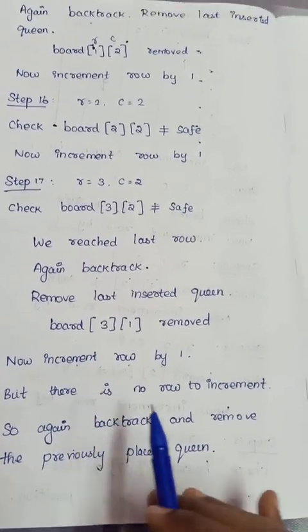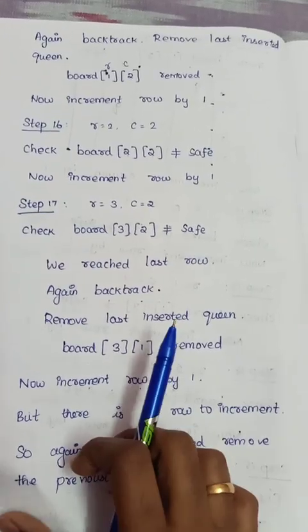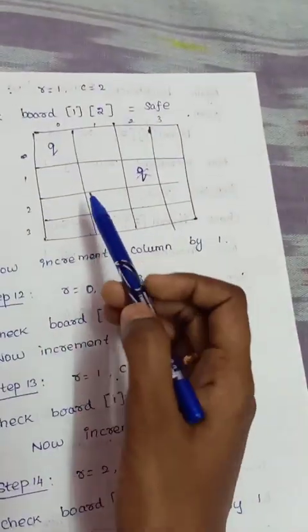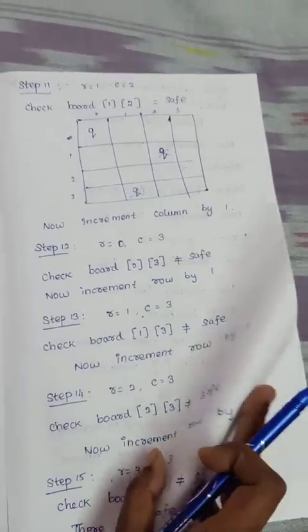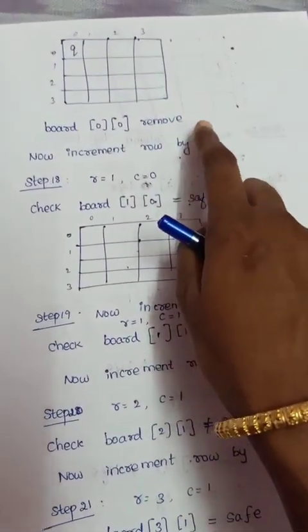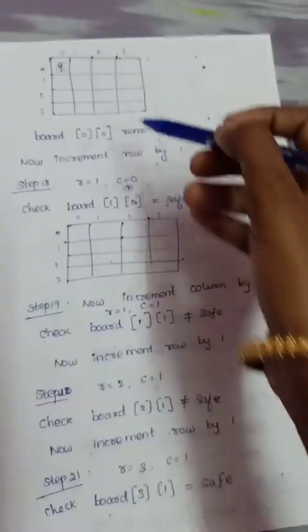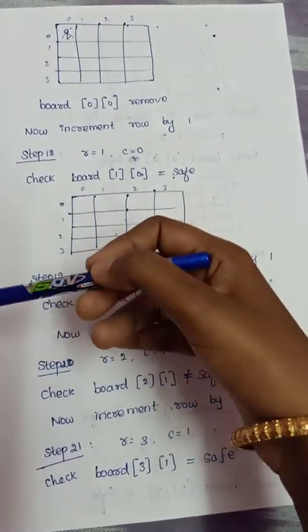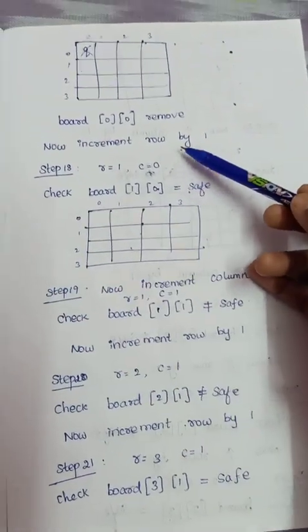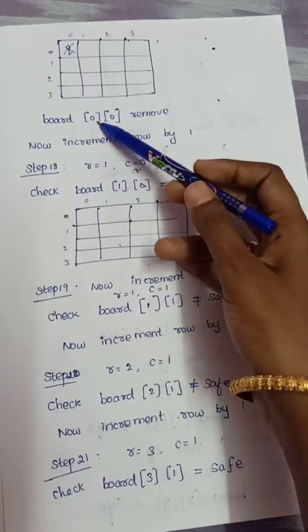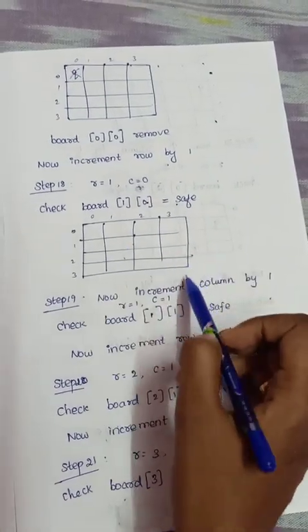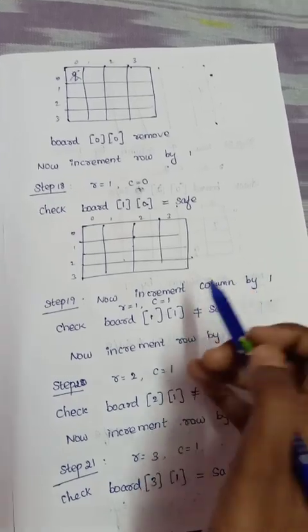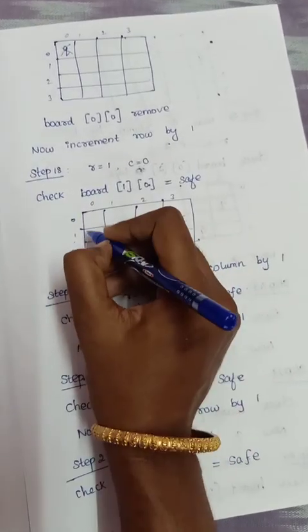We backtrack further and remove the queen at board[0][0]. We increment the row, so now we try board[1][0]. The entire board is cleared and we start fresh with the new position. Board[1][0] is safe, so we place the queen there.